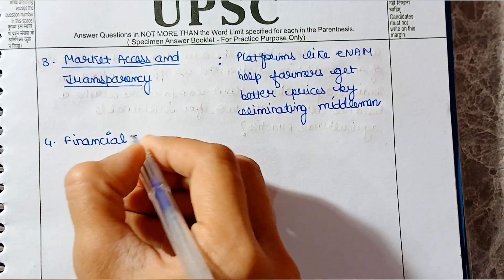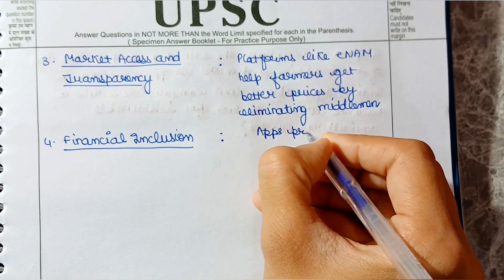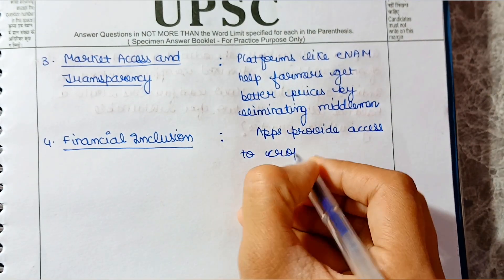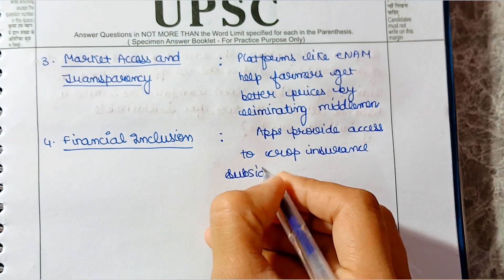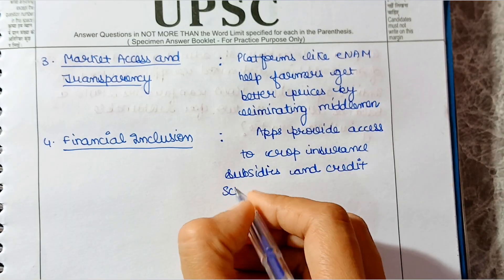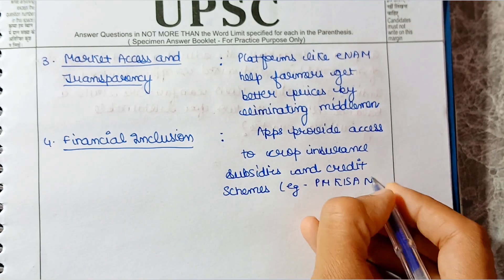Fourth point is financial inclusion. Apps provide access to crop insurance, subsidies and credit schemes. Example, M-Kisan.